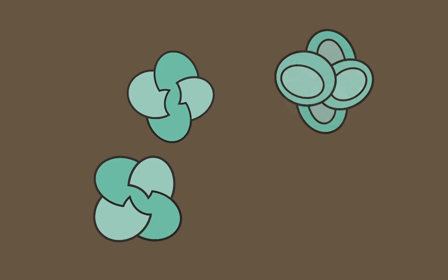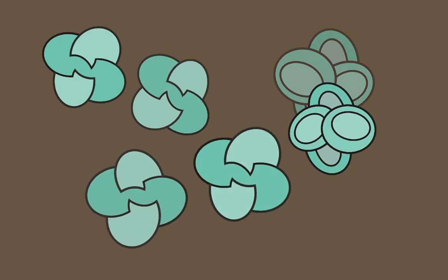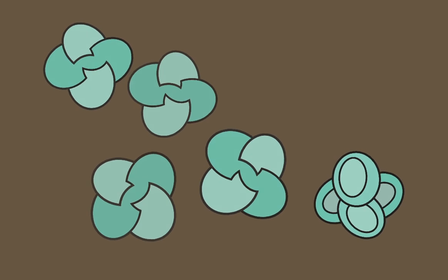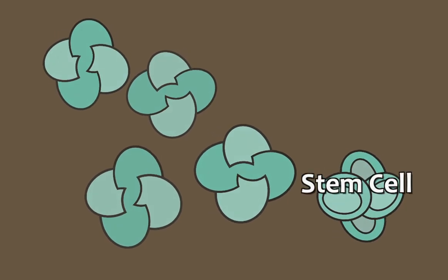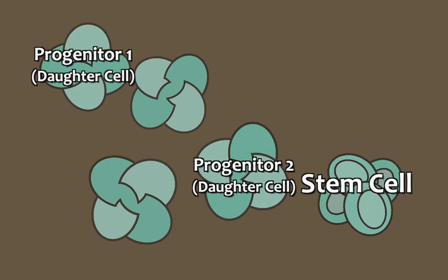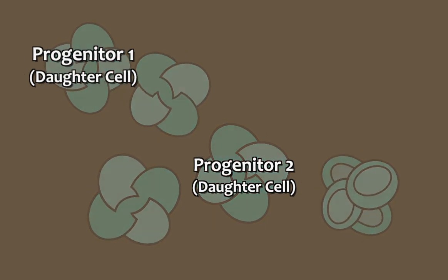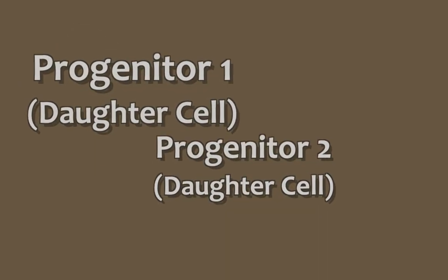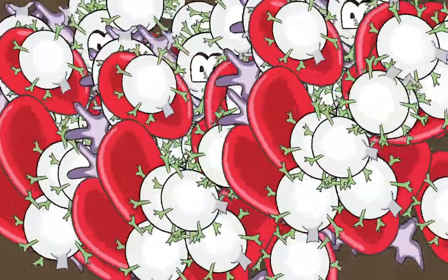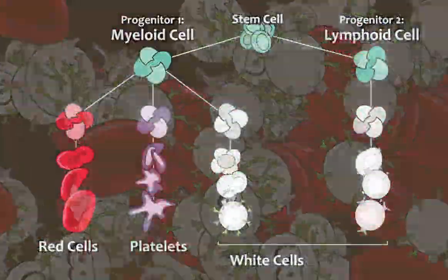The hematopoietic stem cell creates three types of cells. We know that it creates another stem cell so that it keeps the process of regeneration going over and over again. It also creates two branches of the family tree that will continue to differentiate and mature into a vast number of different types of functioning blood and immune system cells.